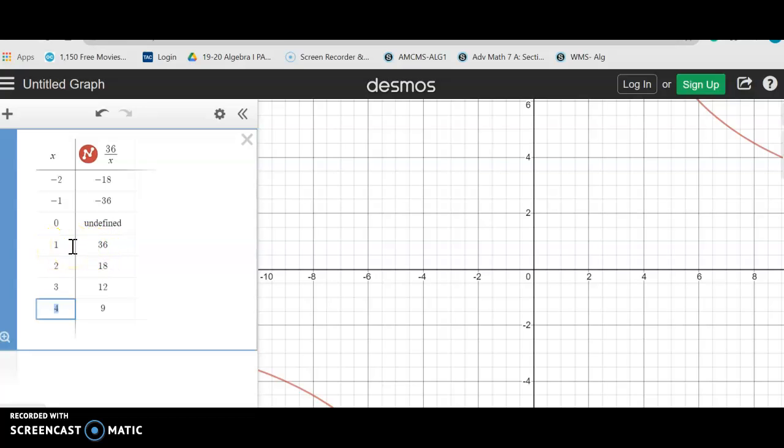So one and 36, two and 18, three and 12, four and nine, five I don't care about because it's not a whole number. Six and six, they're the same so they would flip around. So all of these are my factors.